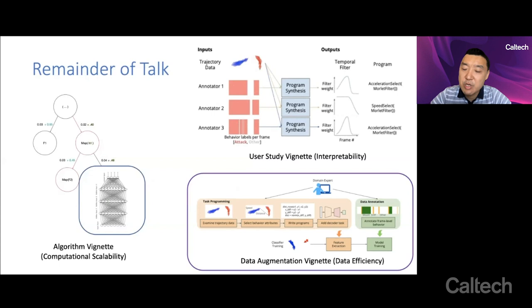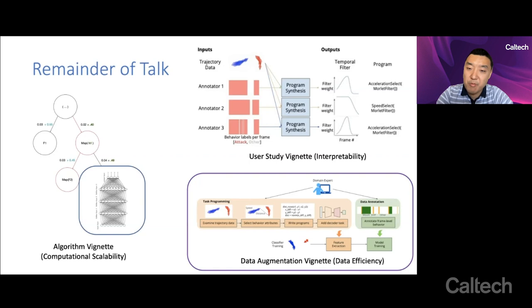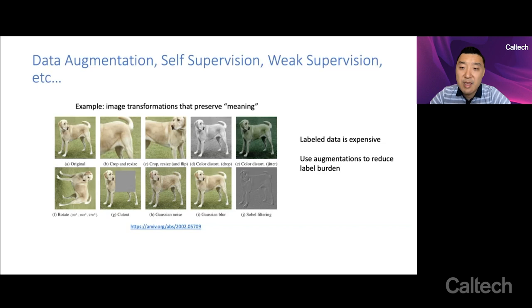The last thing that I want to briefly talk about is a data augmentation vignette where we want to improve the data efficiency of learning. Data augmentation and related ideas such as self-supervision, weak supervision, pre-training, etc. is extremely popular in deep learning right now, because it is a very practical way to improve the data efficiency of deep learning. Here you see an example in analysis of images, which is the most common place that this happens, where you take the original image, which is the image of a dog,